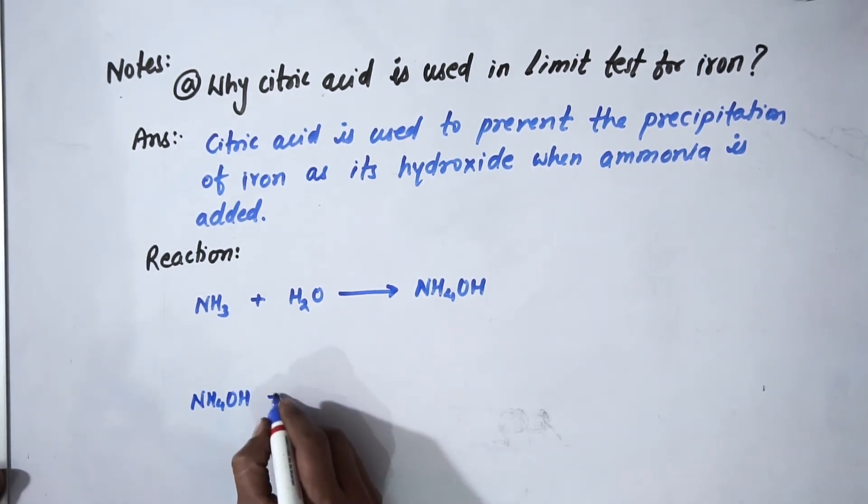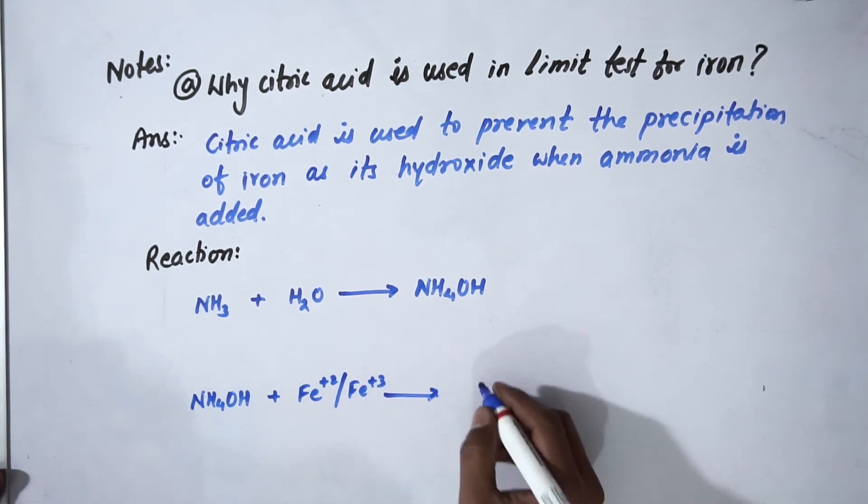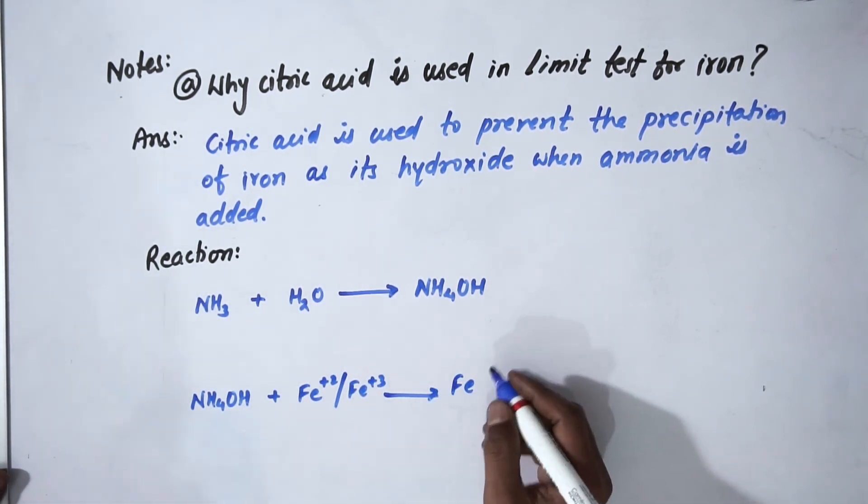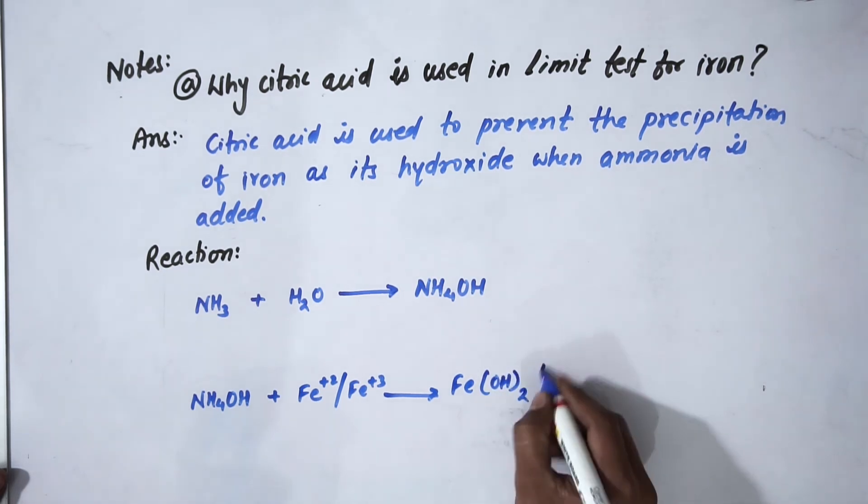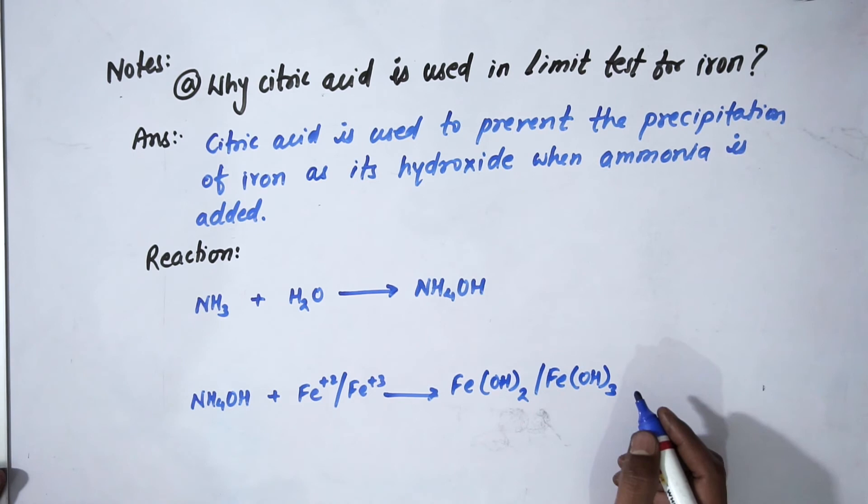This ammonium hydroxide will react with iron, either Fe2+ or Fe3+, to produce ferrous hydroxide Fe(OH)2 or ferric hydroxide Fe(OH)3.